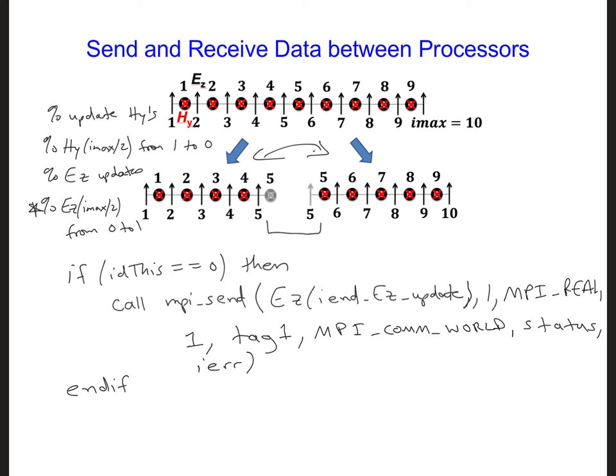So we can end that if statement. And then we need processor 1 to receive the value, so we're going to have another if statement here. If idThis is equal to 1, then we're going to have that processor call MPI_receive. It's going to receive a value, and then we're going to put that in EZ at the istart_EZ_store location.